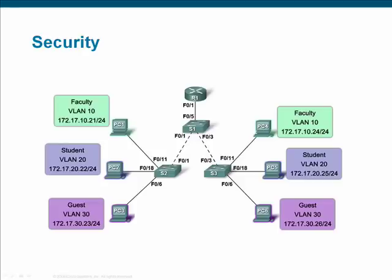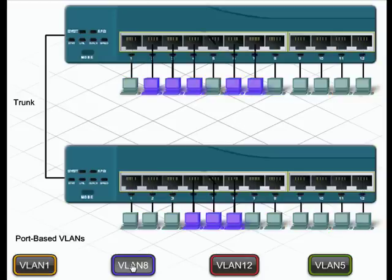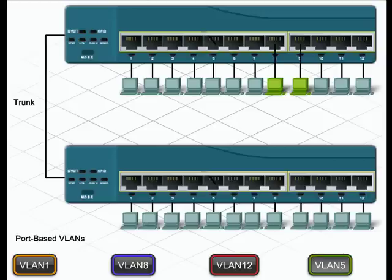Access control lists can be used to further enhance security across VLANs. Now let's look at the most popular type of VLAN configuration: static port-based VLAN assignment. Static VLAN assignment requires an administrator to manually assign each port on a switch to a specific VLAN. Specific ports have been assigned to specific VLANs. Generally, the administrator will create the VLAN first and then assign the ports to the appropriate VLAN. The device plugged into the port automatically becomes part of that VLAN.